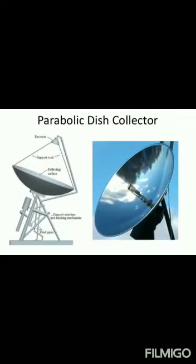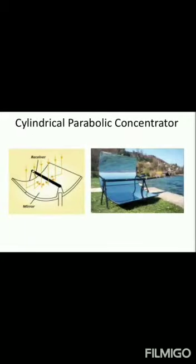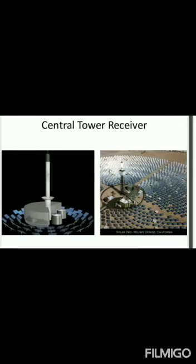One example of a concentrating type solar energy collector is the parabolic dish collector, which has a large surface area and concentrates energy to a single point. Another example is the cylindrical parabolic concentrator. A third type is the central tower receiver, which requires a large collection area.